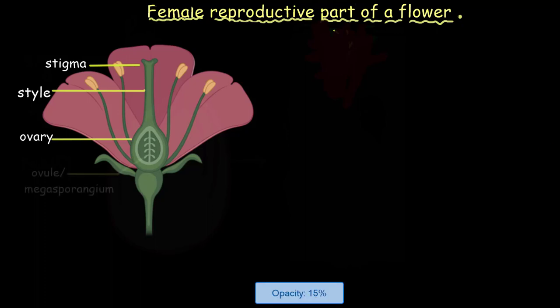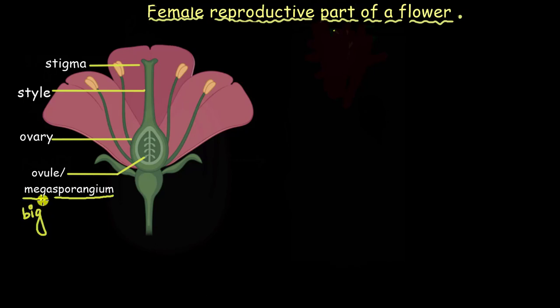These lobules or the lobes are called ovule, and it has also got a fancy name called megasporangium. Sporangium means the area or the place which will develop into a spore, in this case the female spore. It is called mega, which means big, because it is bigger than the male spores, which are called microspores. They grow in microsporangium. We have already discussed about it in our previous videos.